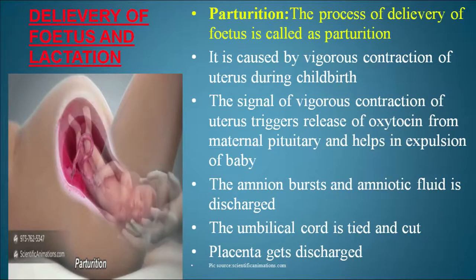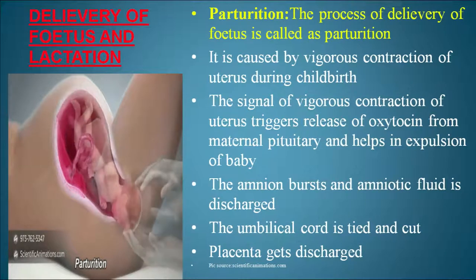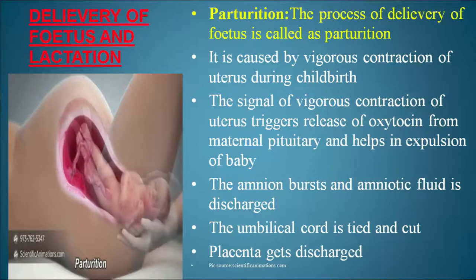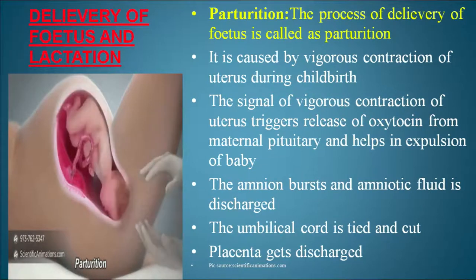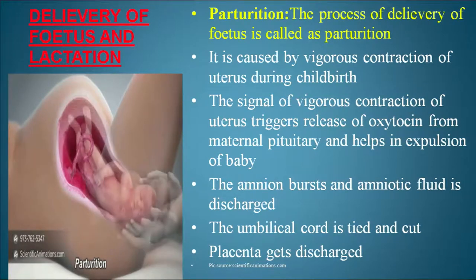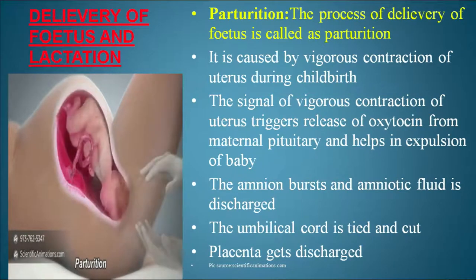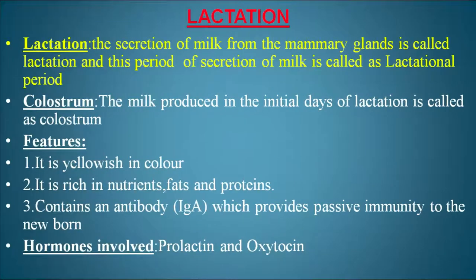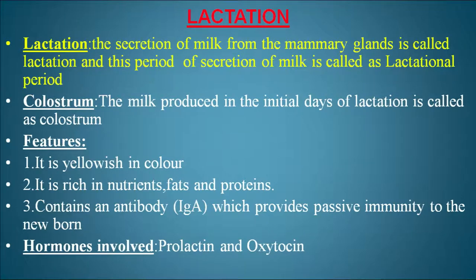By the end of nine months, the fetus is fully developed. The process of delivery of the fetus is called parturition. It is caused by vigorous contraction of the uterus during childbirth, triggered by the release of oxytocin from the maternal pituitary. The amnion bursts and amniotic fluid is discharged; the umbilical cord is tied and cut, and the placenta is discharged. The secretion of milk from the mammary glands is called lactation. The milk produced in the initial days is called colostrum — it is yellowish, rich in nutrients, fats, and proteins, and contains the antibody IgA, providing passive immunity to the newborn. Hormones involved in lactation are prolactin and oxytocin.